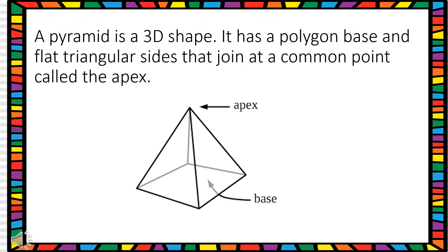Discussing about a pyramid — a pyramid is also a 3D shape, but the only difference is that it has one base which is a polygon, and it has flat triangular sides that join at a common point, a common vertex which is known as the apex.